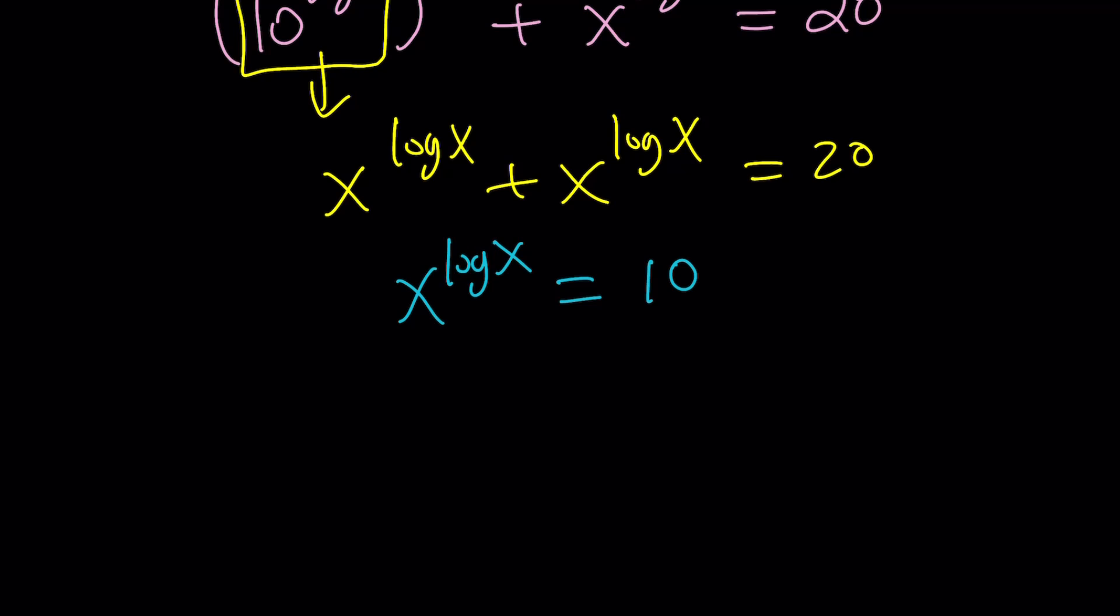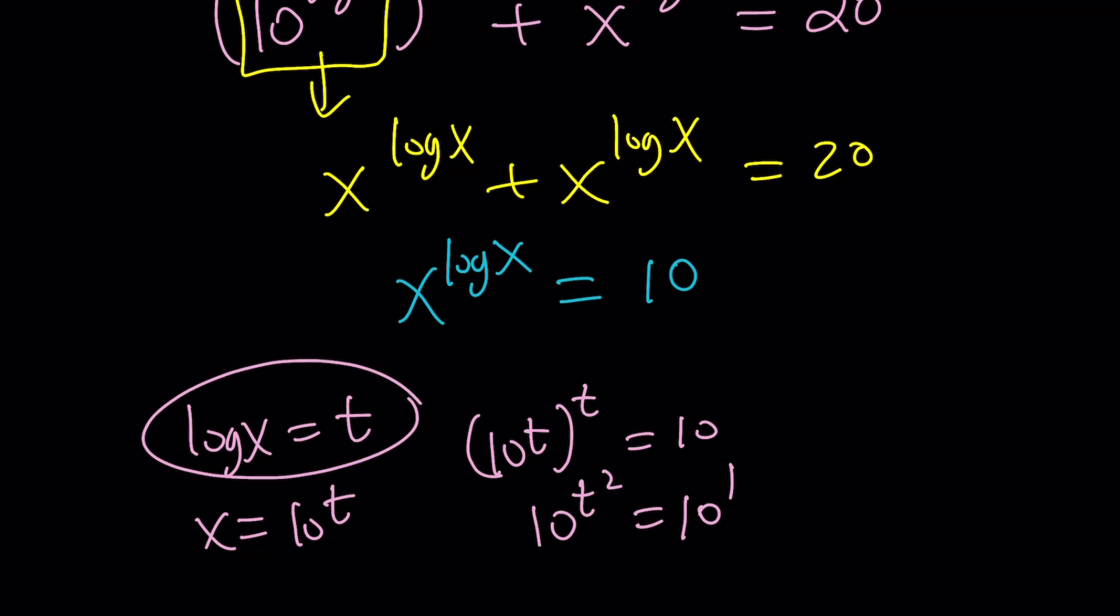How do you solve this problem? You can use substitution if you want. You can set log x equal to t, and then, from here, x becomes 10 to the t, and 10 to the t to the t becomes 10, and 10 to the t squared equals 10 to the first, and t squared equals 1, and t equals plus or minus 1, and then you can go to this to find x.